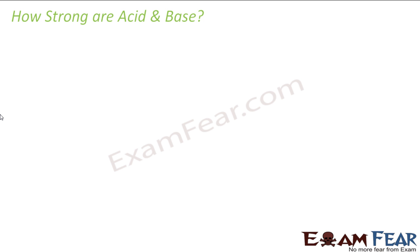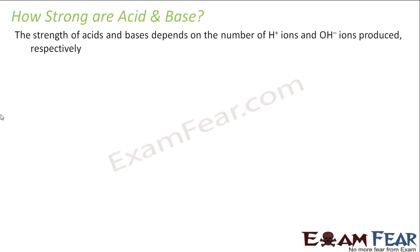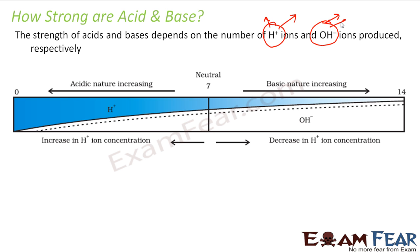We have learned acid, we have learned base, we have learned acid reacts with base — a lot of reactions. But we have also known that some acids are strong and some bases are strong. How do we tell that this acid is stronger than that one? This strength depends on the number of hydronium ions — it all depends on the concentration of H+ and OH- ions that defines the strength of acid.